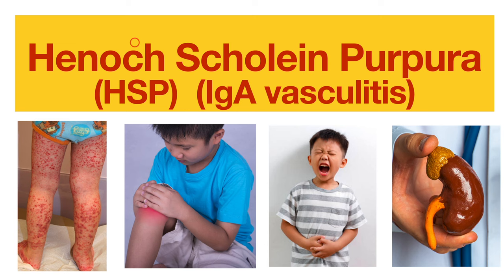Today we talk about Henoch-Schönlein Purpura, HSP, or some may call it IgA Vasculitis. Before we start, if you forget everything from this video, do remember these four features: rashes over bilateral lower limbs, joint pain, very painful tummy, and kidney involvement. These four are the most important involvement of HSP.